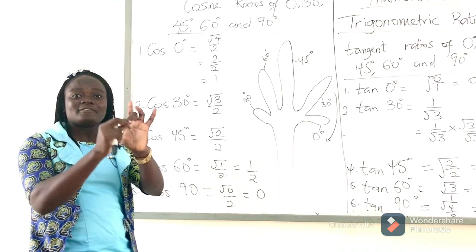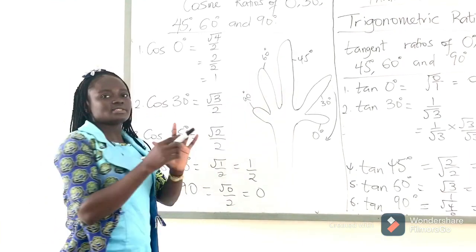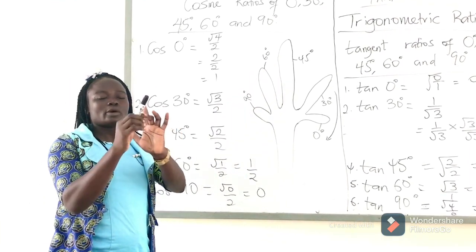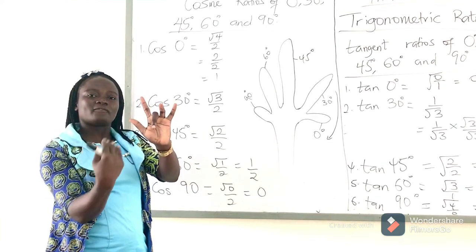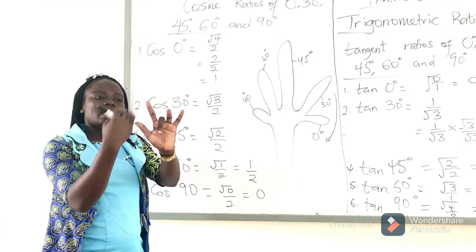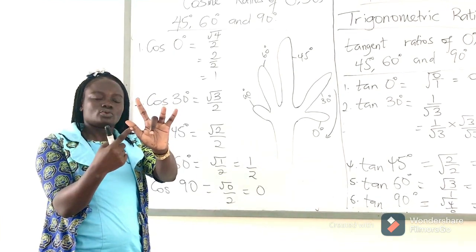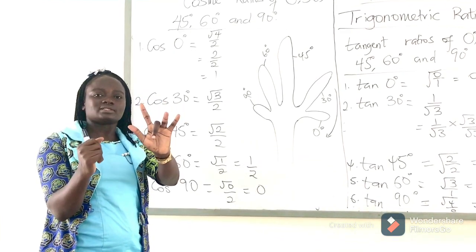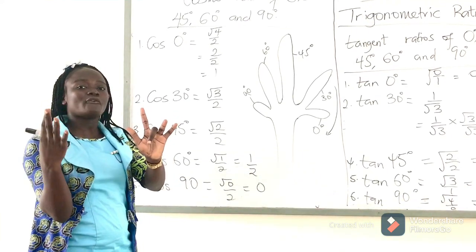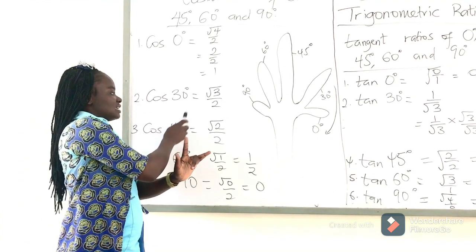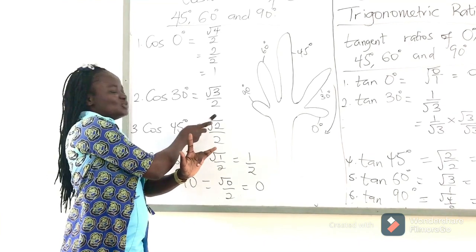The next we have is our middle finger, which represents our 45 degrees. When you take that finger, we count the number of fingers above the middle finger. How many do we have? One, two. We apply our square root to it and divide by our constant denominator of 2. So we can confidently say that cosine 45 degrees is square root of 2 over 2.